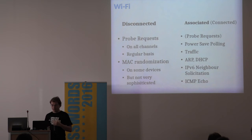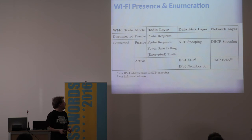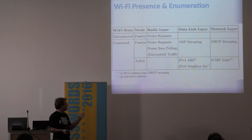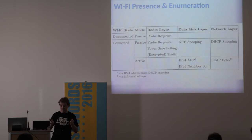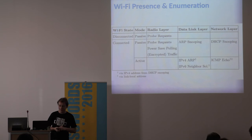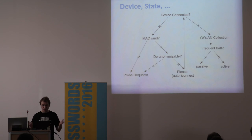This table sums up the presence and enumeration possibilities on Wi-Fi. In the disconnected state, we can passively sniff probe requests. In the connected state, we can passively monitor traffic and record MAC addresses. And if a phone produces no traffic whatsoever within a time frame, we can still actively probe for its existence — for example using ICMP echo, but some devices don't answer ping requests. However, they have to answer ARP requests or IPv6 neighbor solicitation requests — they cannot do without this.